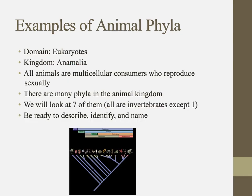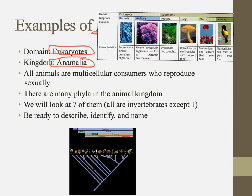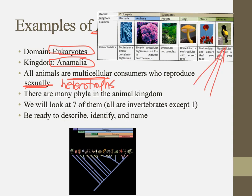Now let's move on to animal phyla. If we're talking about animals, we're in the domain of eukaryotes and the animal kingdom. It's worth noting that bacteria and archaebacteria each have just one kingdom, but eukaryotes are split into plants, animals, fungi, and protists — a total of six kingdoms. All members of the animal kingdom share a few characteristics: they are multicellular, sexually reproducing, and for the most part heterotrophs.